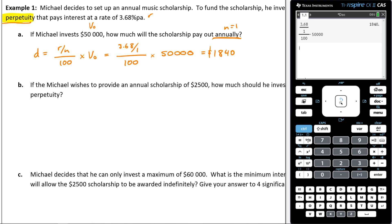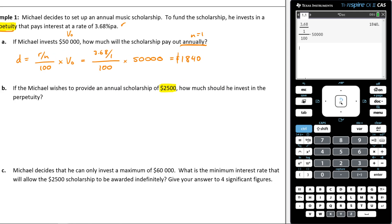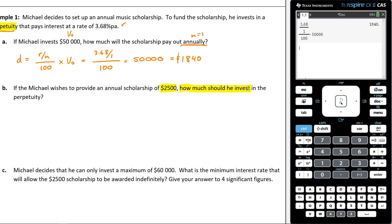Let's read it carefully with our highlighter. It says, if Michael wishes to provide an annual scholarship of $2,500, how much should he invest? So how much should he invest in the perpetuity? Let's really understand what this is saying. Previously, it was paying out $1,840, and that's when we invested 50 grand into this perpetuity. We now want it to pay out $2,500 instead. So the question will be, how much will I have to invest in order to achieve this result?